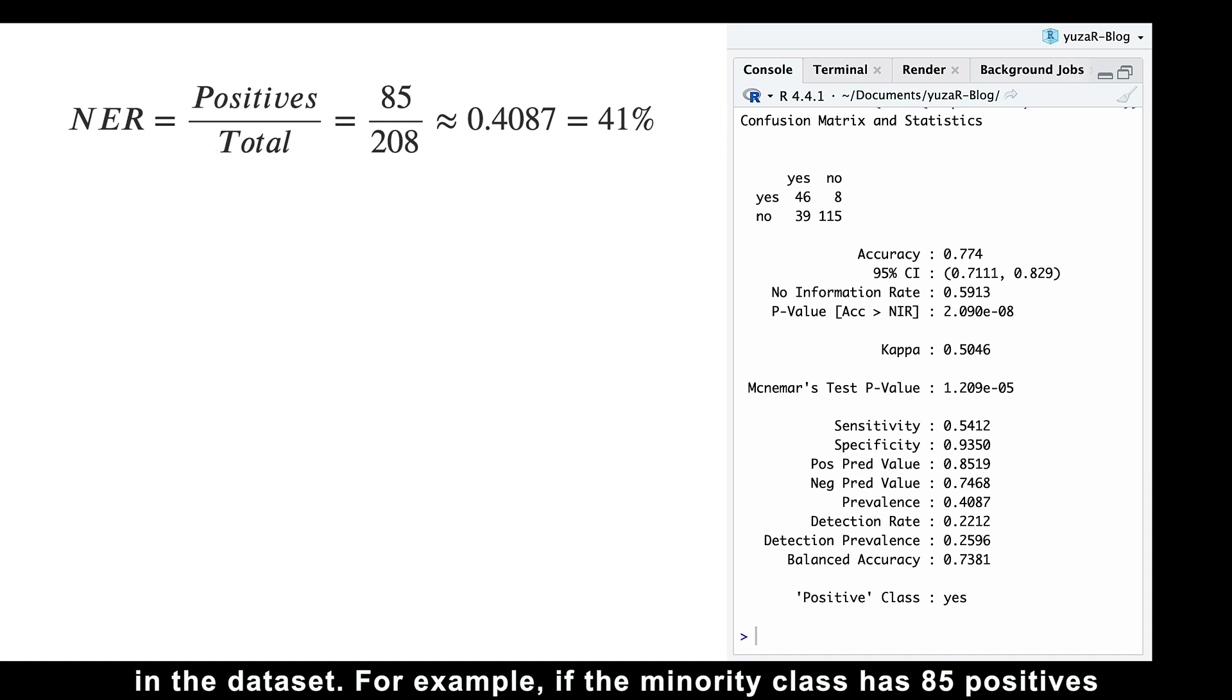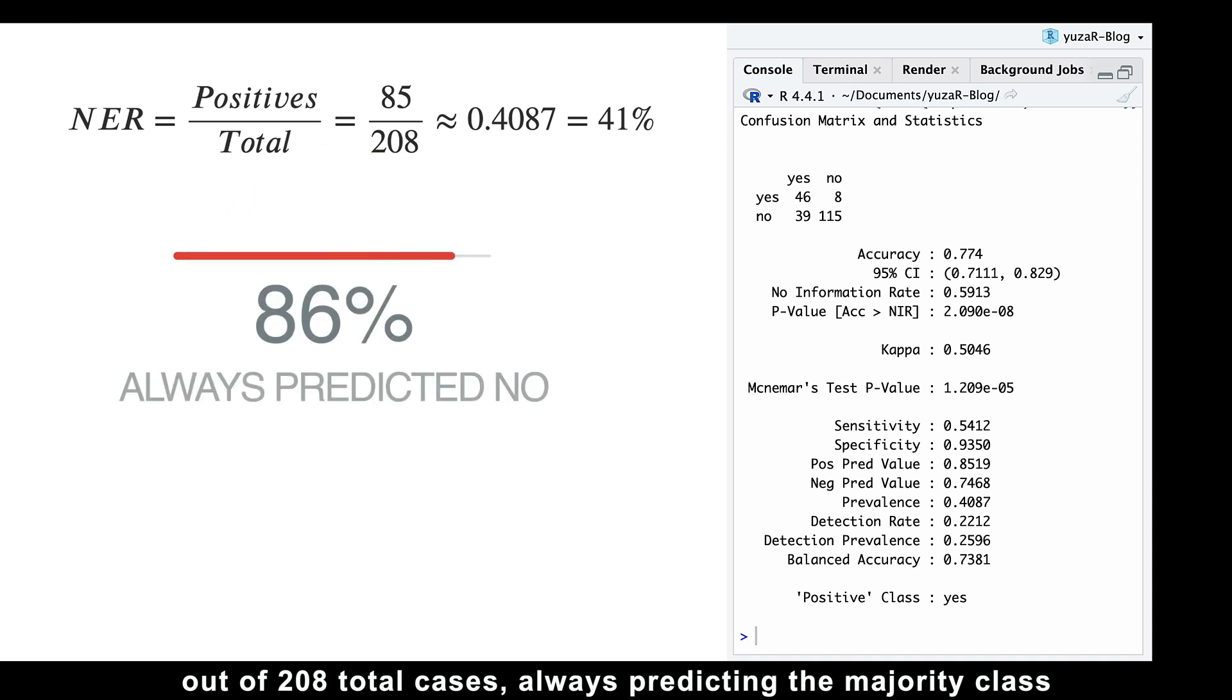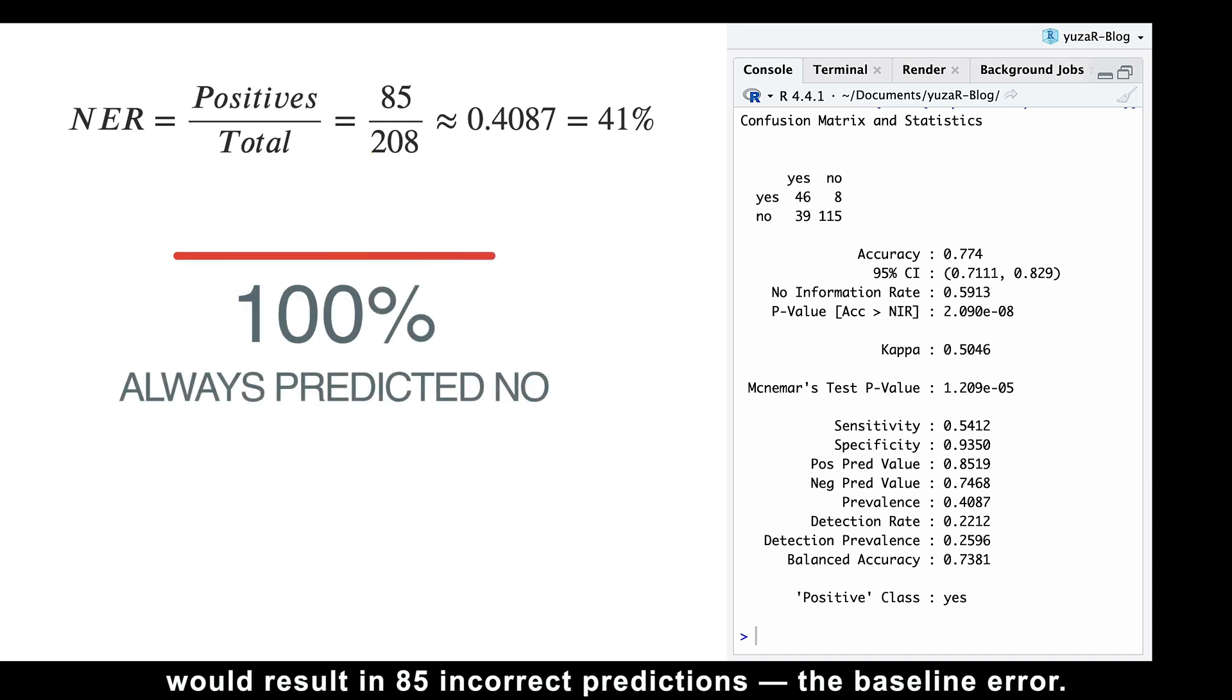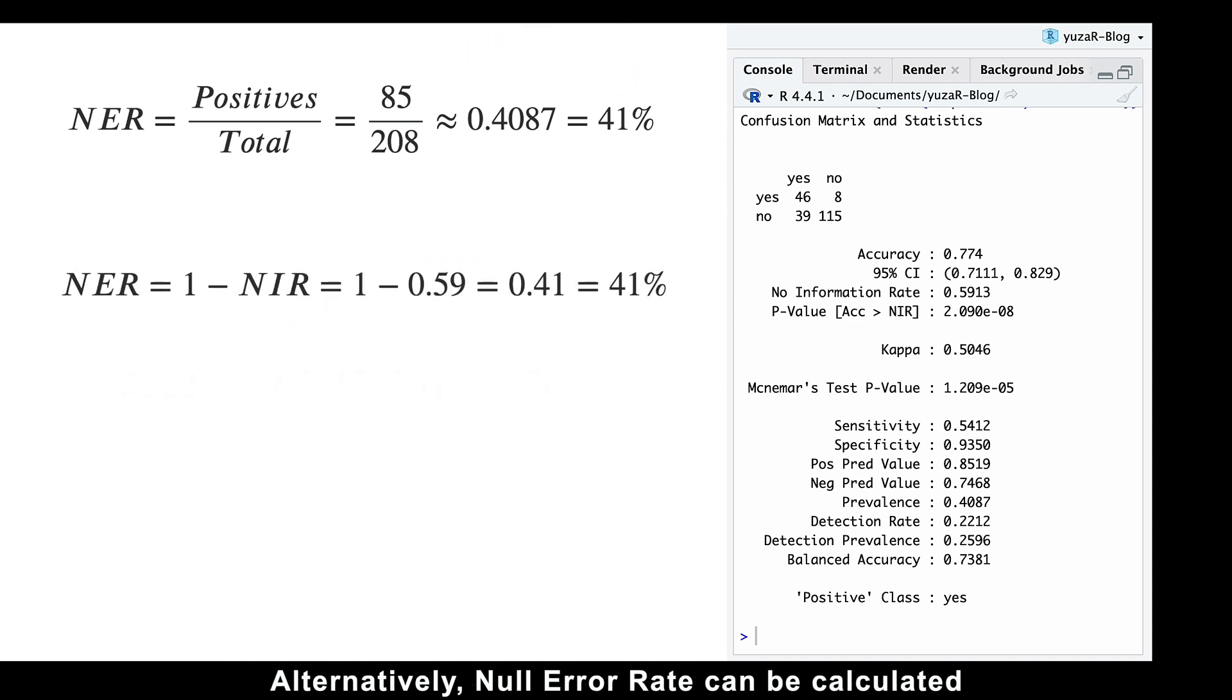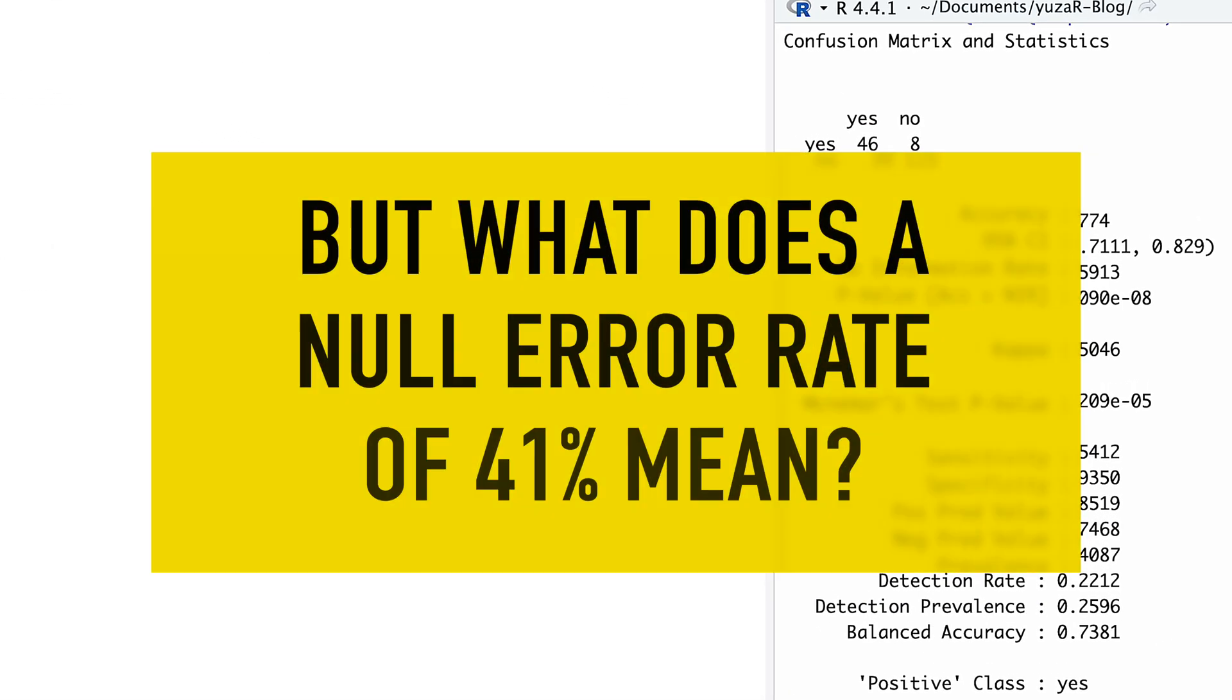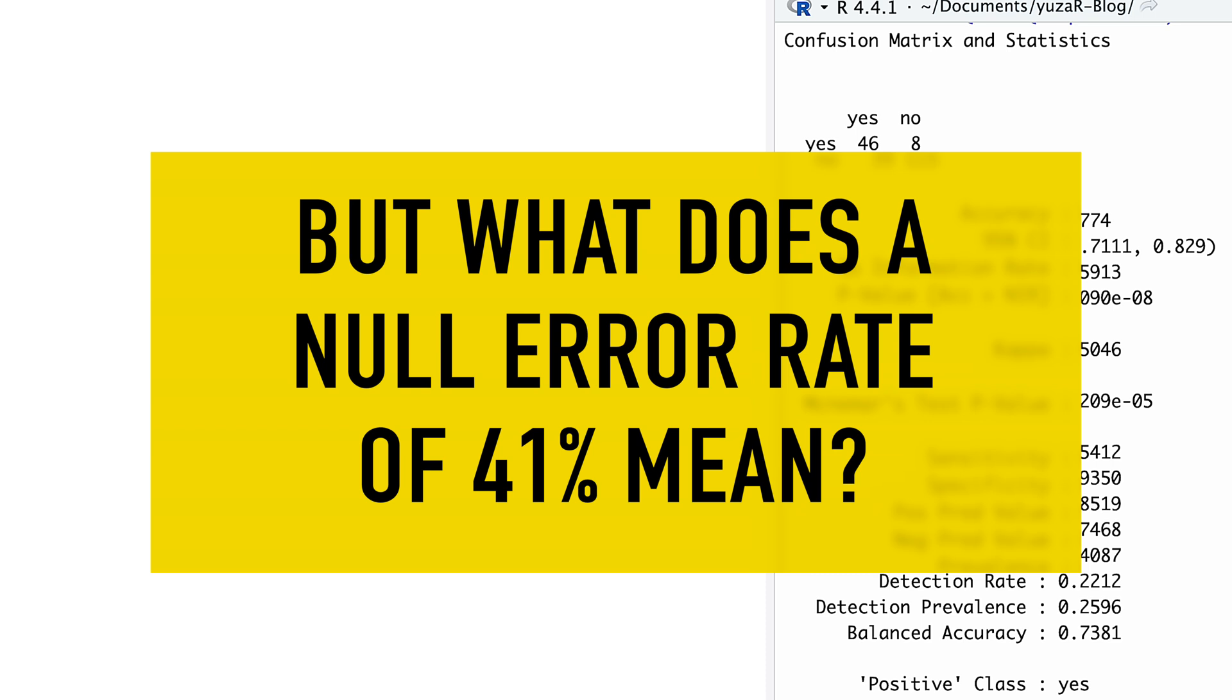The null error rate is simply the proportion of the minority class in the dataset. For example, if the minority class has 85 positives out of 208 total cases, always predicting the majority class would result in 85 incorrect predictions, the baseline error. Alternatively, the null error rate can be calculated as the opposite of the no information rate. But what does a null error rate of 41% mean?